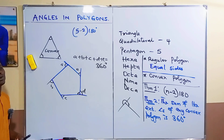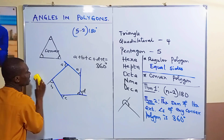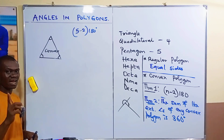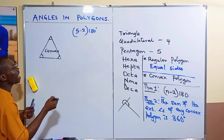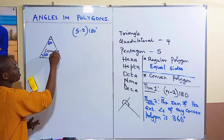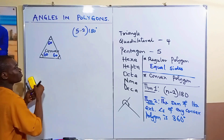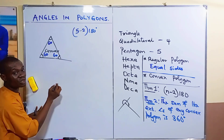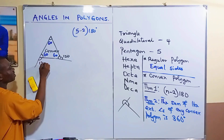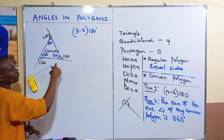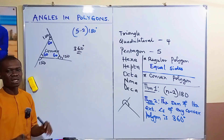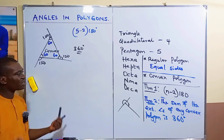For example, take a regular triangle — an equilateral triangle. The interior angles are all 60 degrees. If you extend each side, each exterior angle will be 120 degrees. Summing the three exterior angles: 120 + 120 + 120 = 360 degrees. This holds for every other type of polygon.